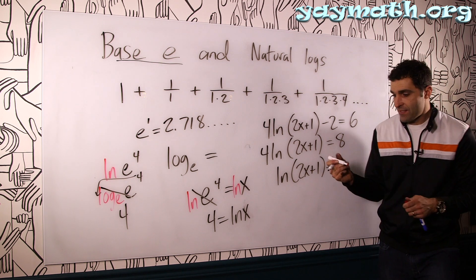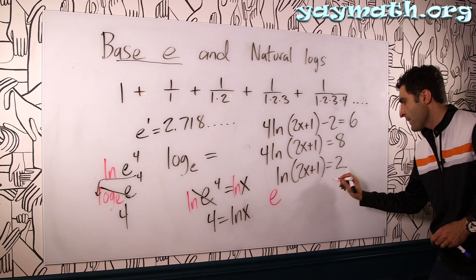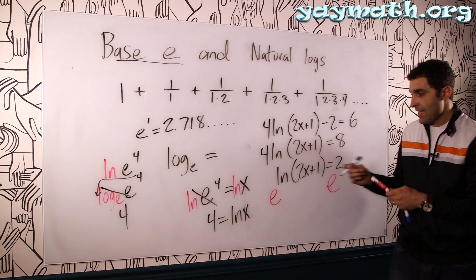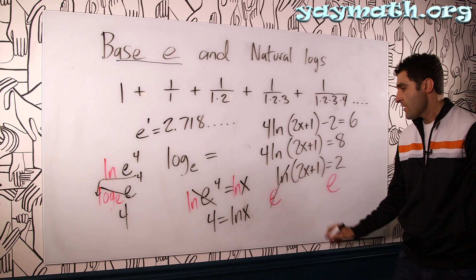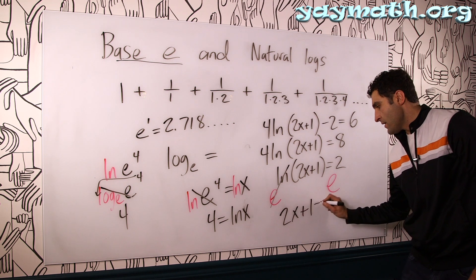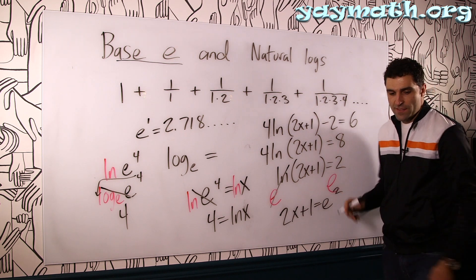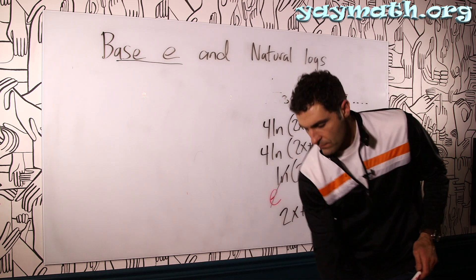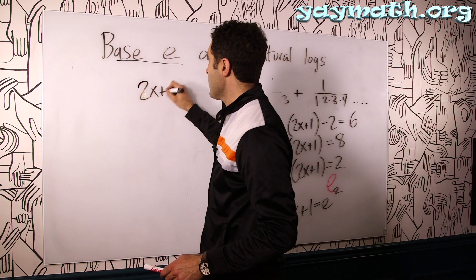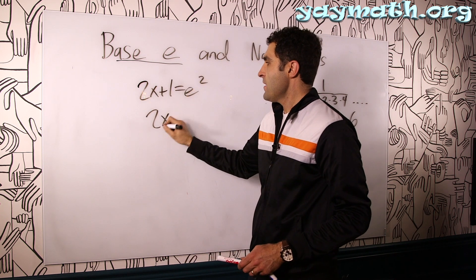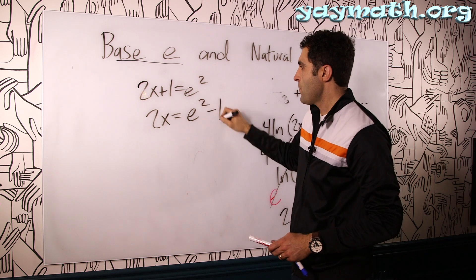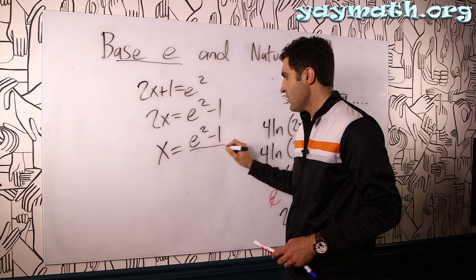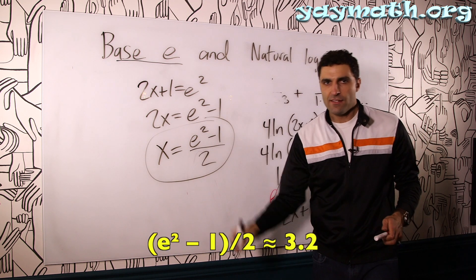Then we take E of both sides because E and LN are opposite functions. So it's E to this thing equals E squared. And E and LN, as we discussed, they cancel each other out. And you're left with 2x plus 1 equals E squared. And then you solve this guy. That's 2x plus 1 equals E squared. 2x equals, subtract 1 on both sides, you get E squared minus 1. Divide both sides by 2. x equals E squared minus 1 all over 2. And you put that in the calculator.